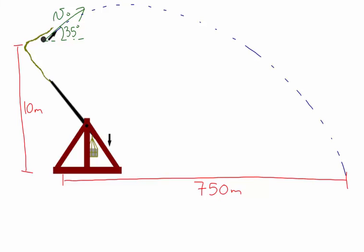This problem looks at finding the initial velocity of a giant catapult throwing a pumpkin a distance of 750 meters. The given information is: the pumpkin is thrown at an initial angle of 35 degrees with the horizontal, it is released from a height of 10 meters above the ground, and it travels 750 meters before reaching the ground.